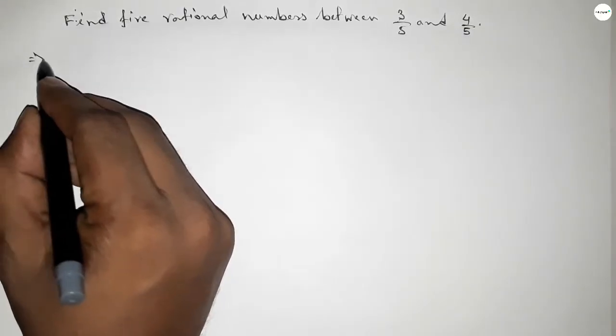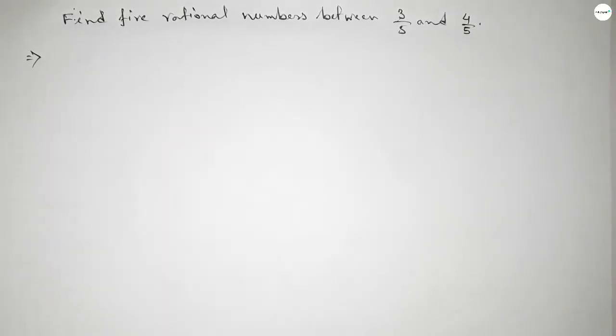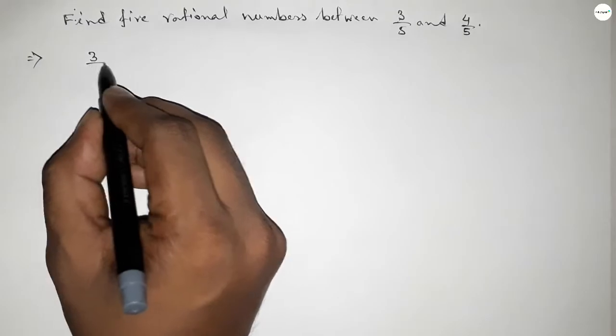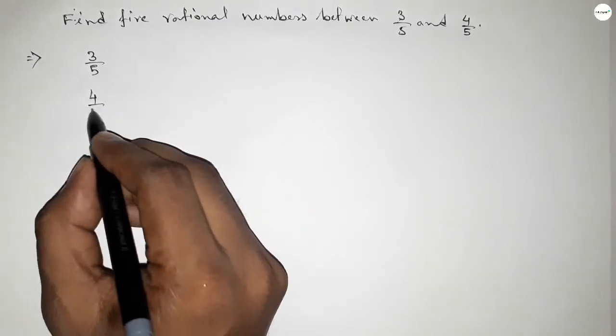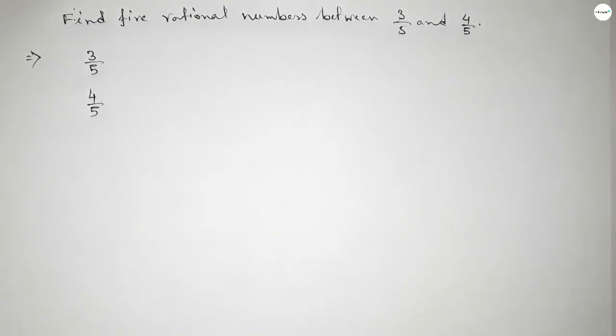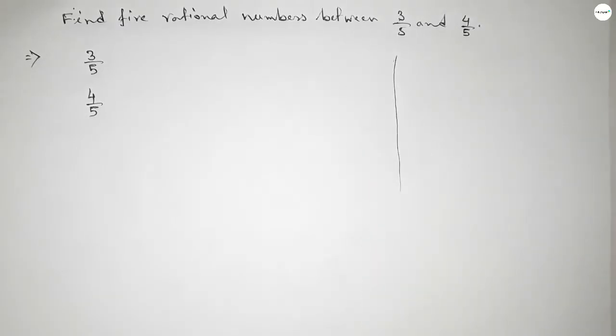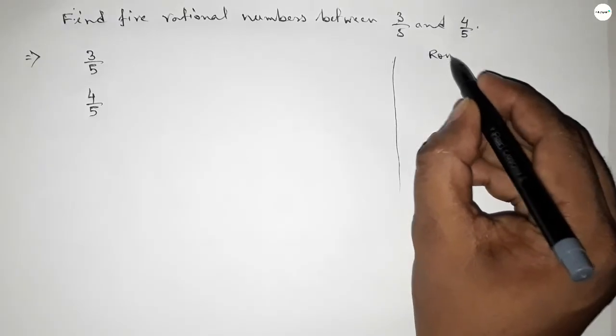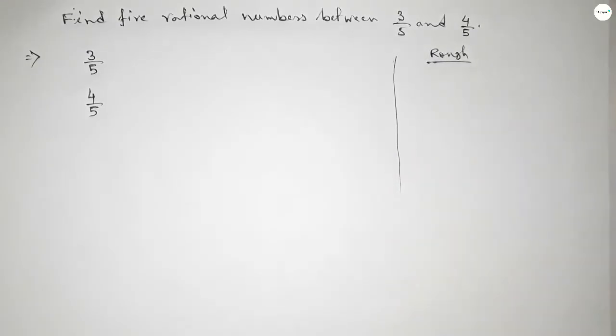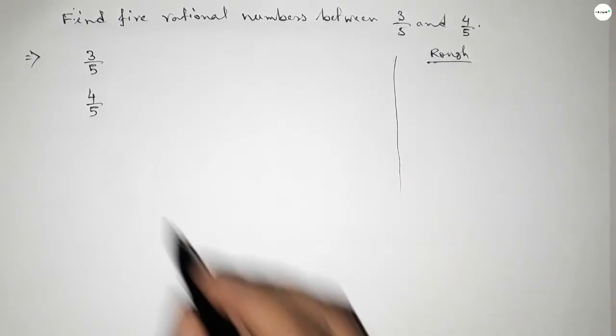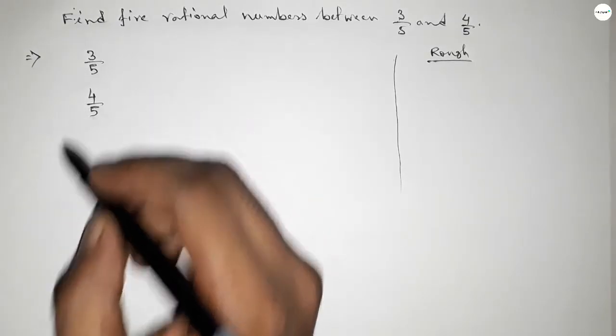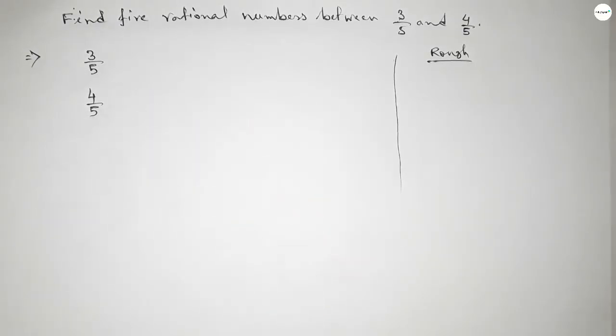First of all, write down the given numbers 3 over 5 and 4 over 5. Now, roughly discussing some important calculations here. The denominator of both numbers are the same, so now we have to find out 5 numbers in natural number form between 3 to 4.